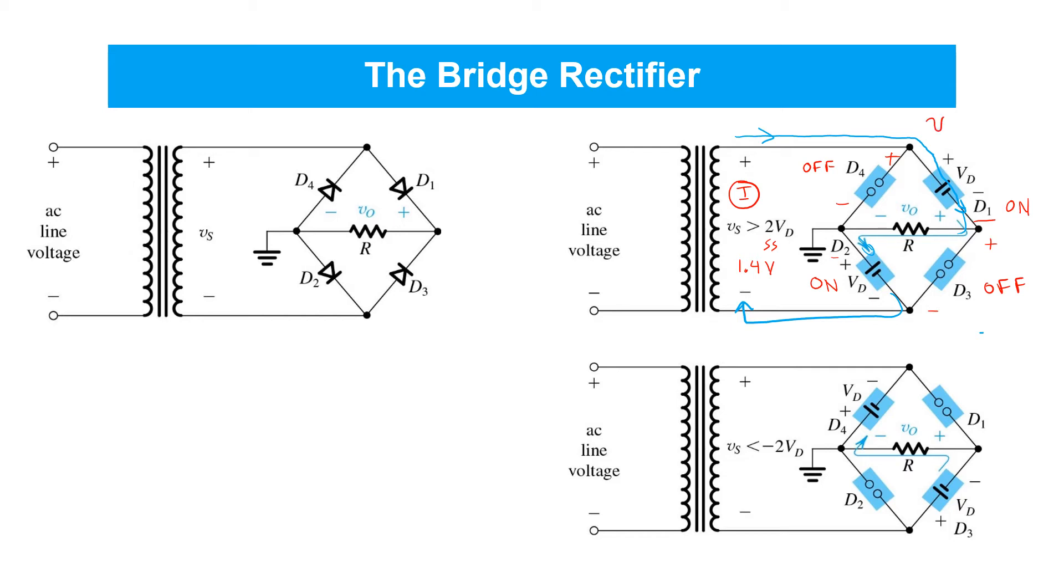The output in this case VO is equal to the input VS, but it experiences two forward voltage drops VD along the way. So, again, using our constant forward voltage drop model, VO is VS minus 1.4 volts. So, that's case one.